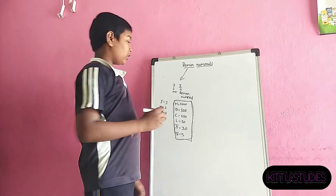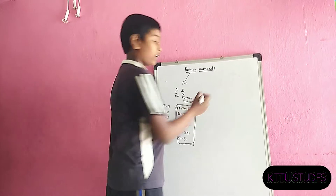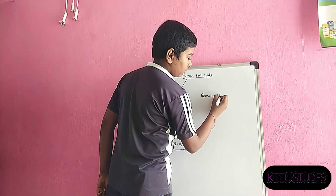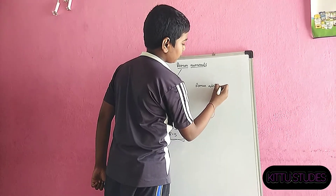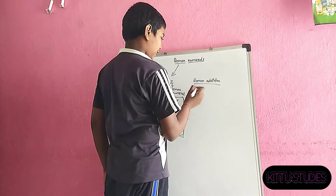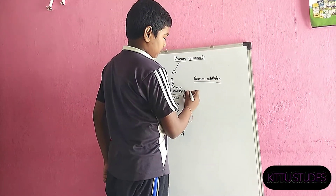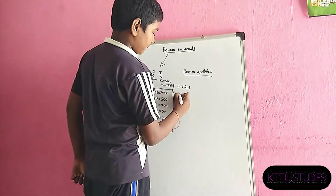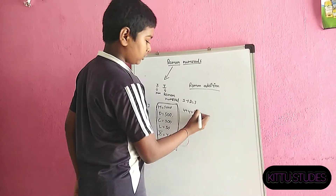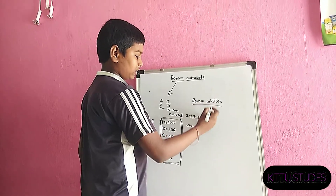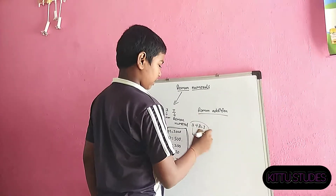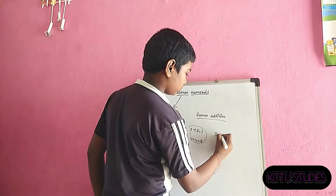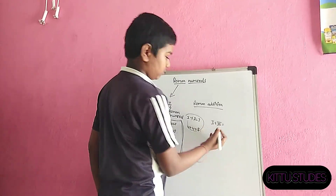And what is Roman addition? Roman addition. Did you know Roman addition? We know how to add these numbers. 1 plus 2 is equal to three. 4 plus 4 is equal to five — not this, this is numbers addition. And this is Roman addition.